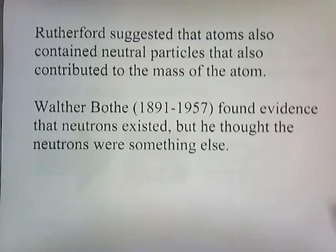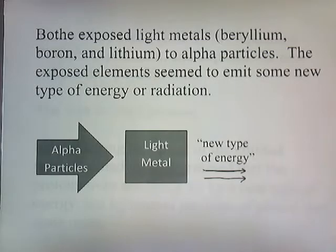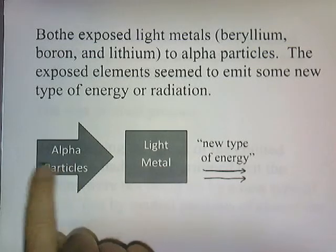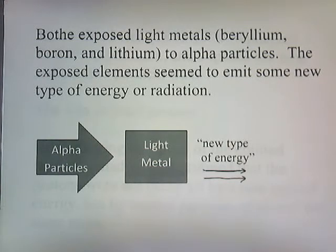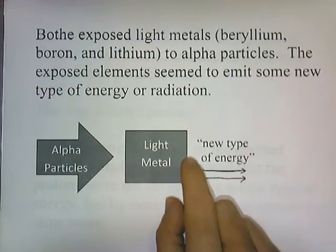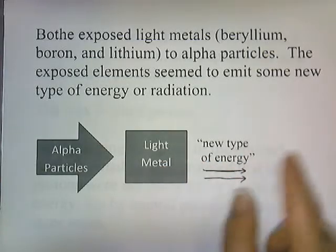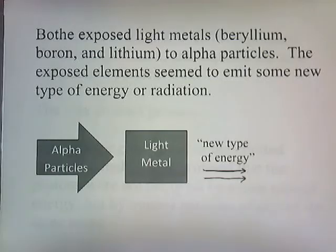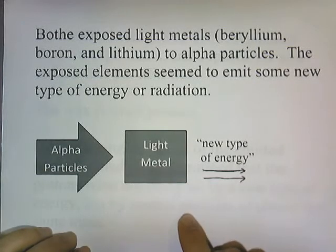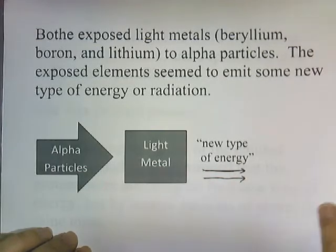A scientist named Walter Bothe found evidence that neutrons existed, though he thought the neutrons were something else. He exposed very light metals — beryllium, boron, and lithium — to alpha particles from radioactive polonium. The alpha particles slammed into the light metals, and the metals seemed to be releasing some type of radiation — a very strong energy. Originally they thought it was gamma rays, a high-energy radiation they already knew about, but they didn't know what this new type of energy actually was.